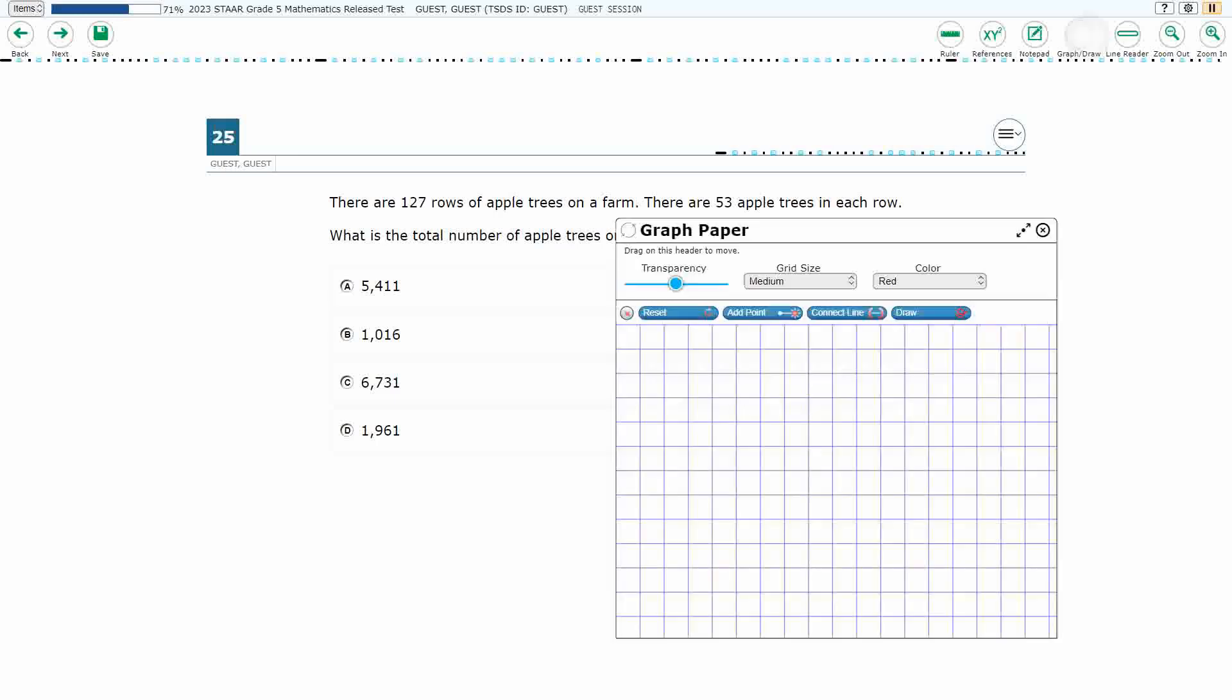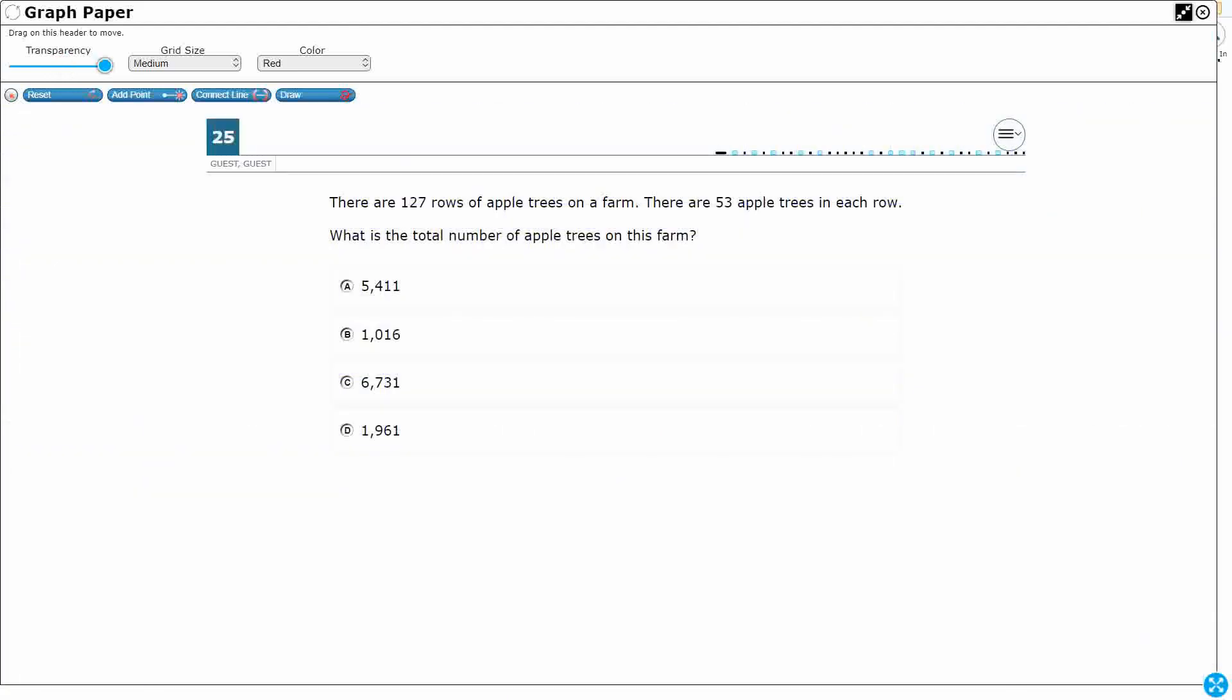So seems like a pretty straightforward problem here. We have 127 rows of apple trees. Okay, so we could, if we are really interested, draw an array here. We can say, okay, these are my rows, and how many rows do I need to draw? Well, let's just say it goes down an infinity—127, not quite infinity, but it seems like it's going to. And then how many are on each row? Well, I'm not going to draw columns, I'll just write the number, so there's 53.